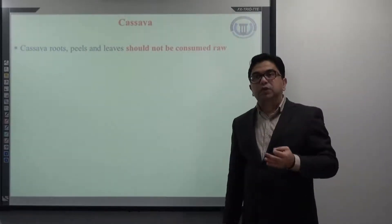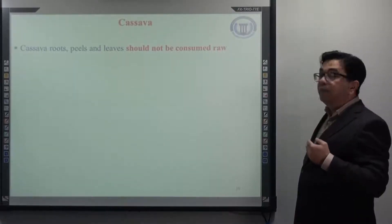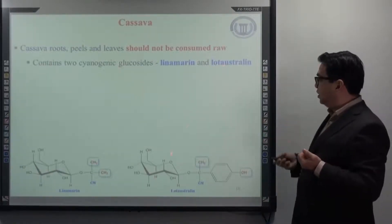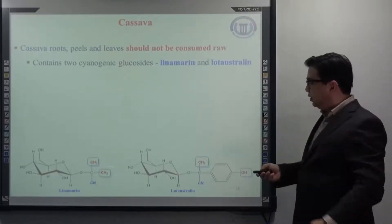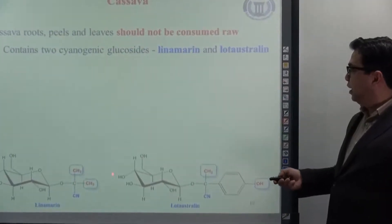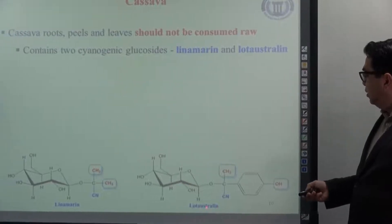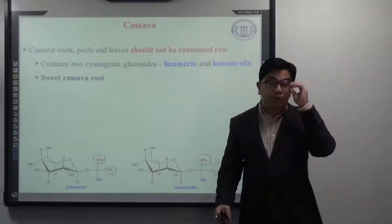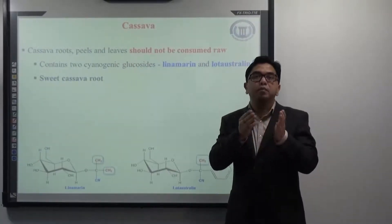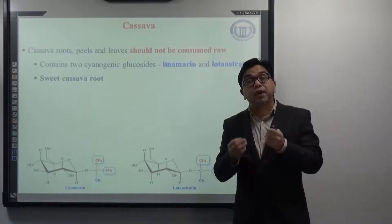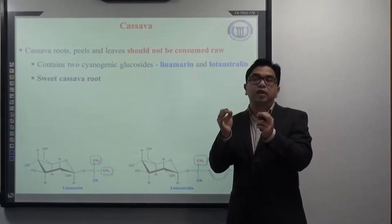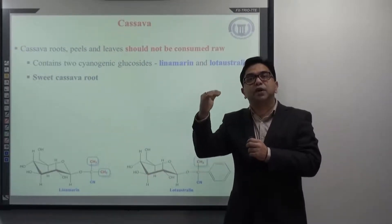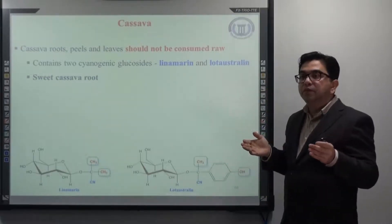Cassava root, peels, and leaves should not be consumed raw, because they contain two cyanogenic glycosides: linamarin and lotaustralin. If you look at the difference between the two structures, linamarin does not contain an aromatic ring in the aglycone part — it contains two methyl groups — whereas lotaustralin contains one methyl group and one aromatic ring. Cassava root can be of two varieties: sweet cassava root and bitter cassava root. The taste depends on the amount of cyanogenic glycoside present. If more is present, the root tastes bitter; if less, it tastes sweeter.